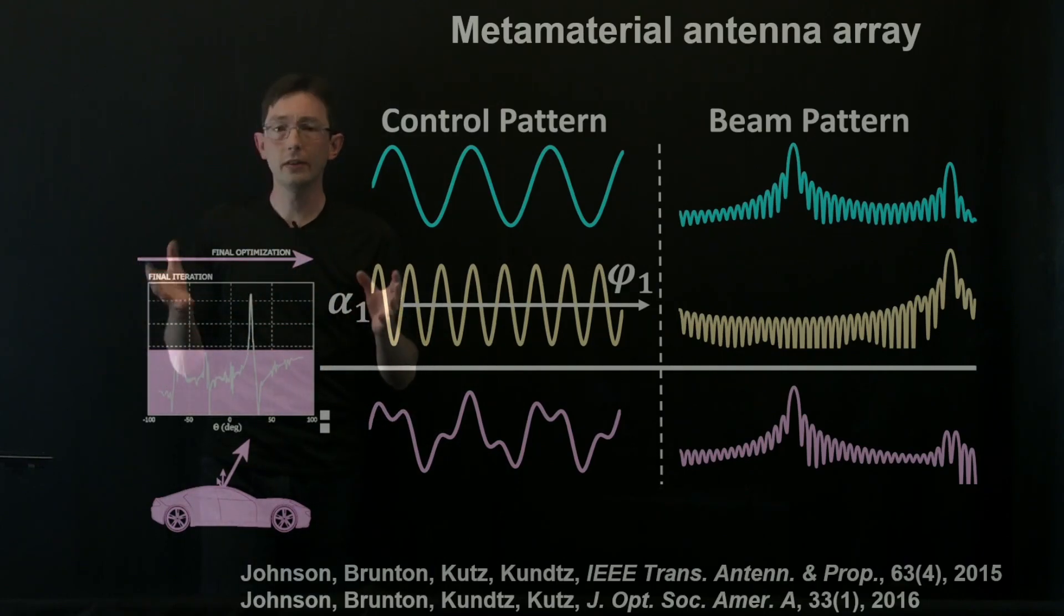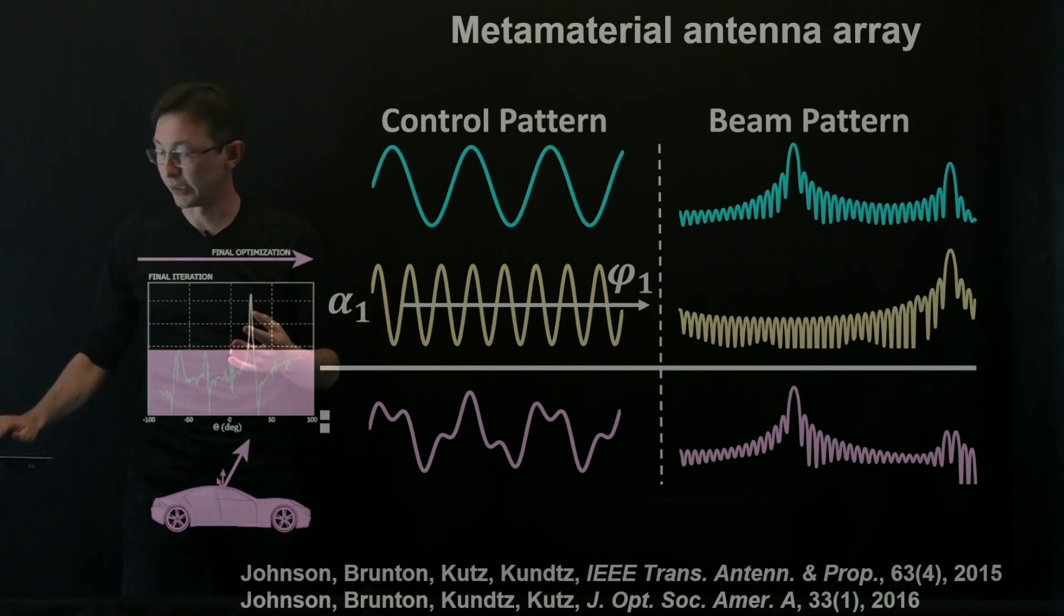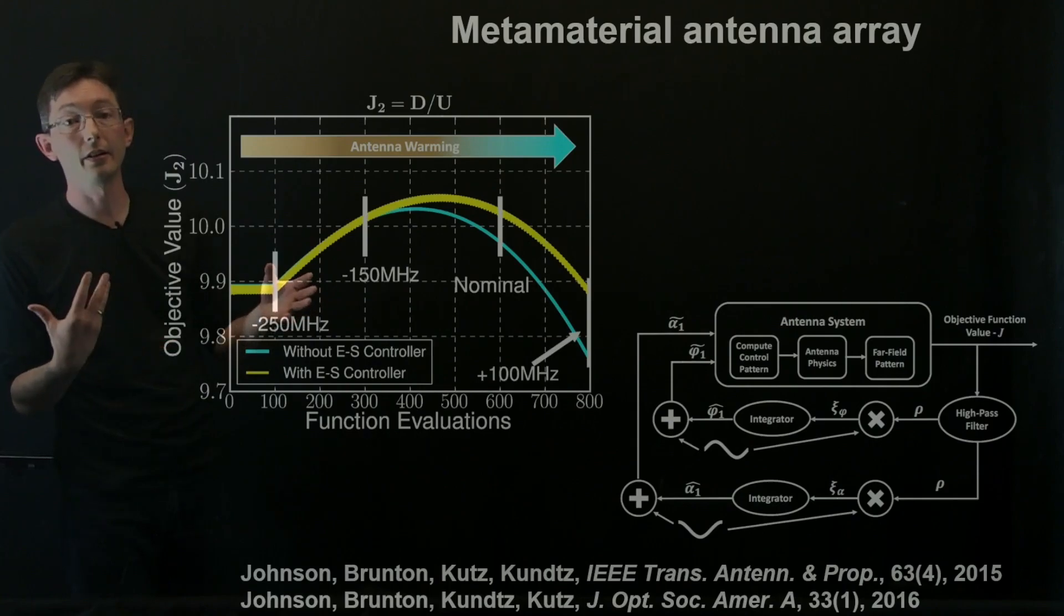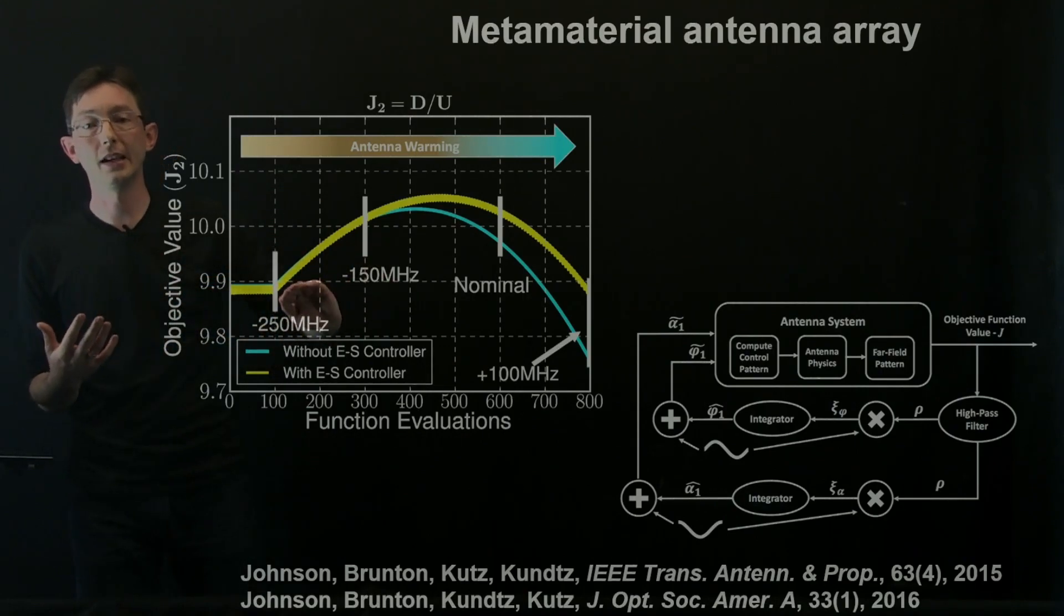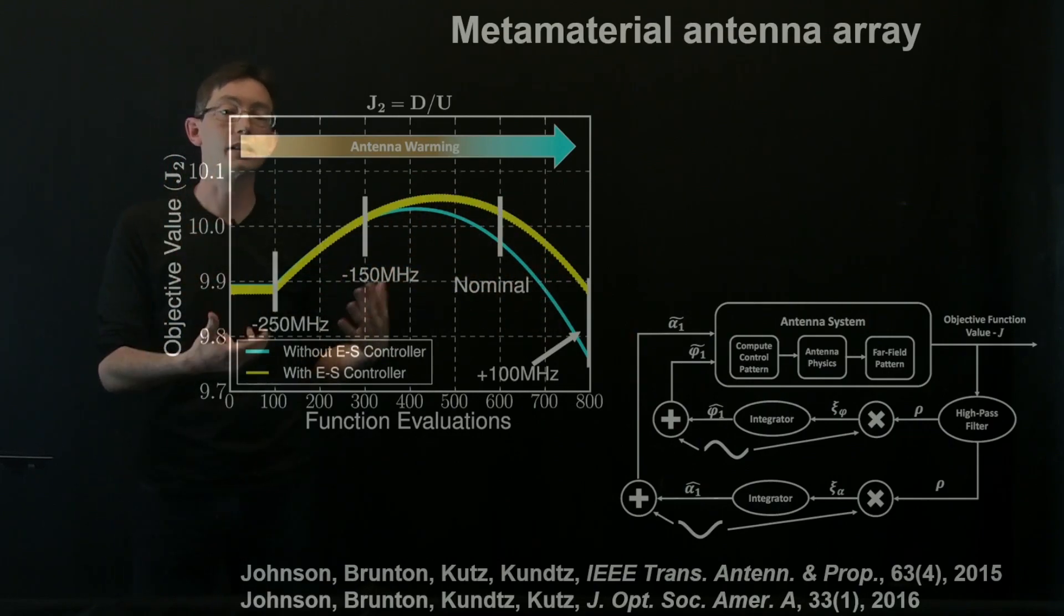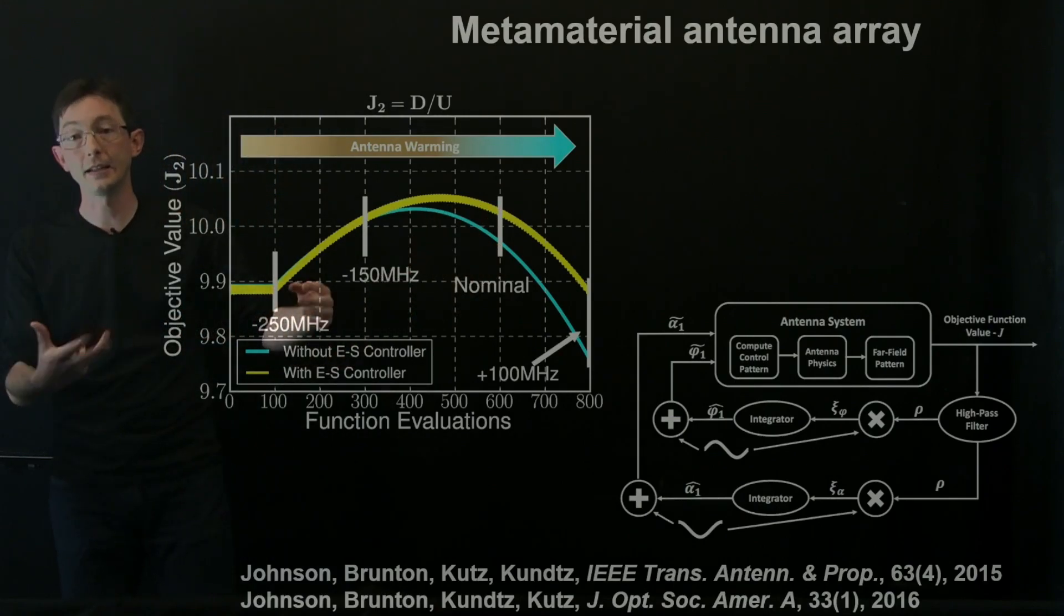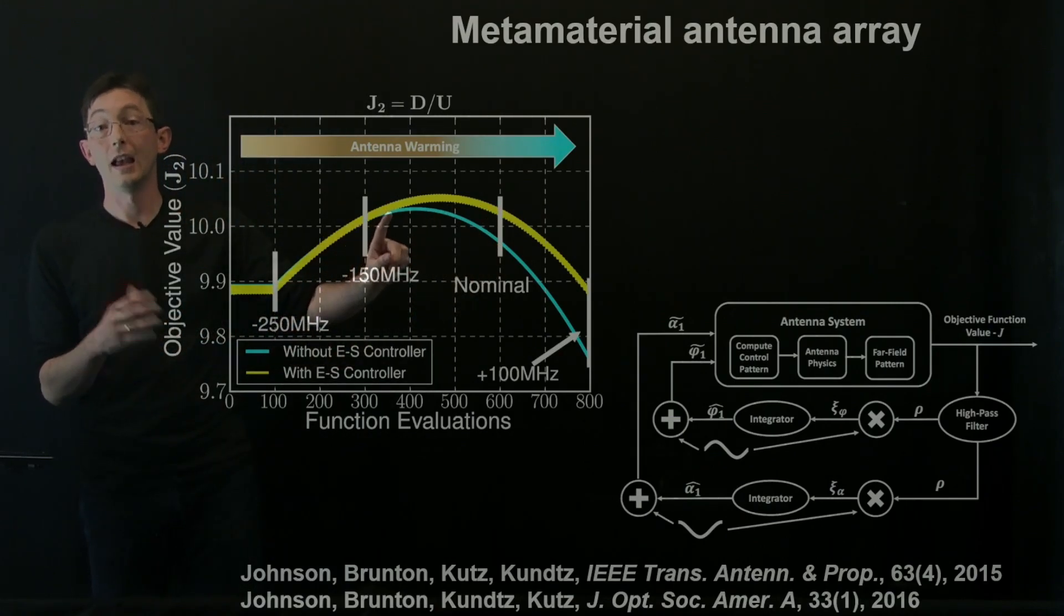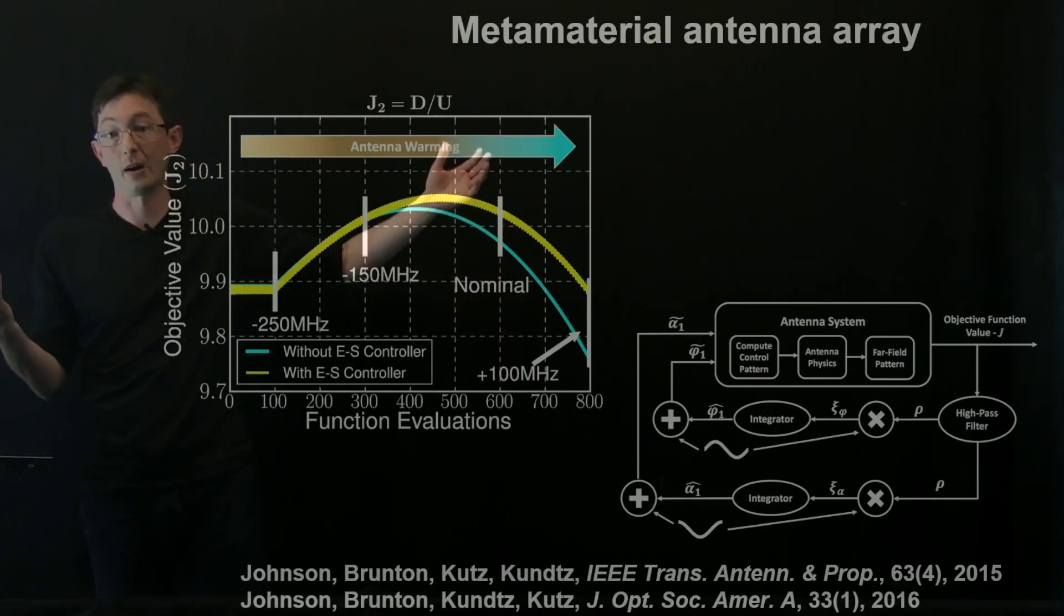So in all of these cases, you're essentially able to account for unknown disturbances. In the case of the metamaterial antenna array, we simulated warming. So the physics changes when it gets hotter or colder. And so what we did was we simulated antenna warming over the course of a day. And we use the extremum seeking controller to essentially track that optimal objective value in yellow here. And if we didn't have our extremum seeking controller as the antenna warmed up, we would actually lose performance over what is possible.